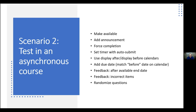Question: What about students who have accommodations and need longer time? There is an Exempt option. You set what you want for everybody, and then there's a place to exempt particular people — it's called Test Availability Exceptions. You can add a single user there. Set up what you want for the class as a whole, and if someone has accommodations, put their name in the exceptions area to handle things differently for them.